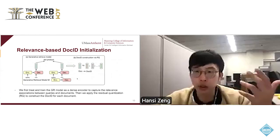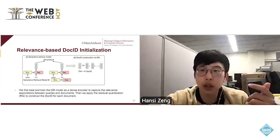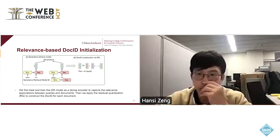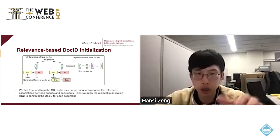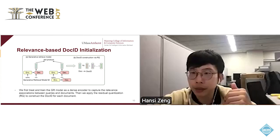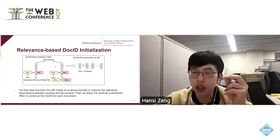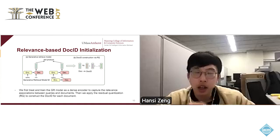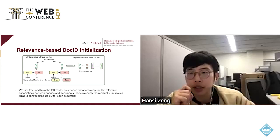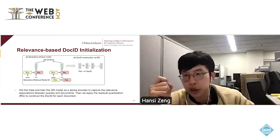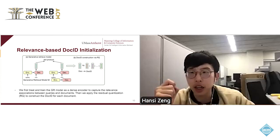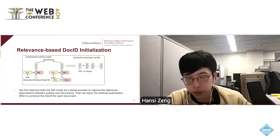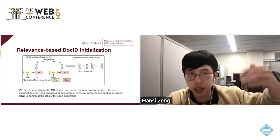To satisfy these two properties, we first train the GR model as a dense encoder to obtain reference-based document representations — as shown in figure A. After obtaining document representations, we apply the residual quantization algorithm to assign document IDs. We use residual quantization instead of other algorithms such as product quantization because residual quantization constructs each new token based on previous tokens, which allows it to capture the hierarchical structure of documents.